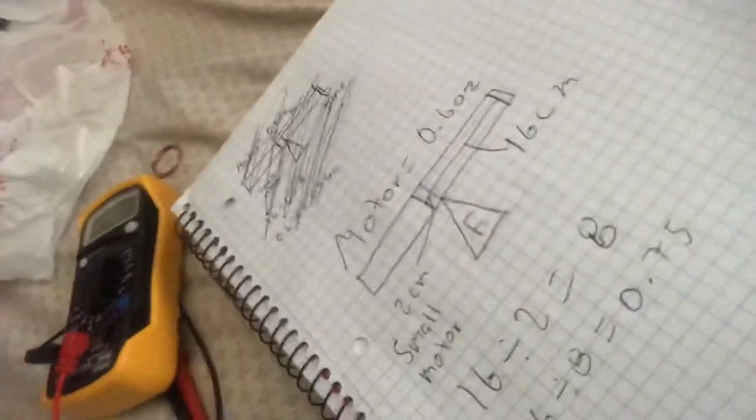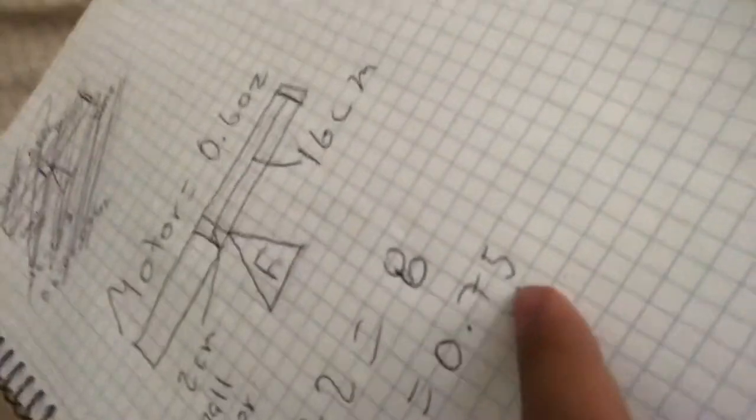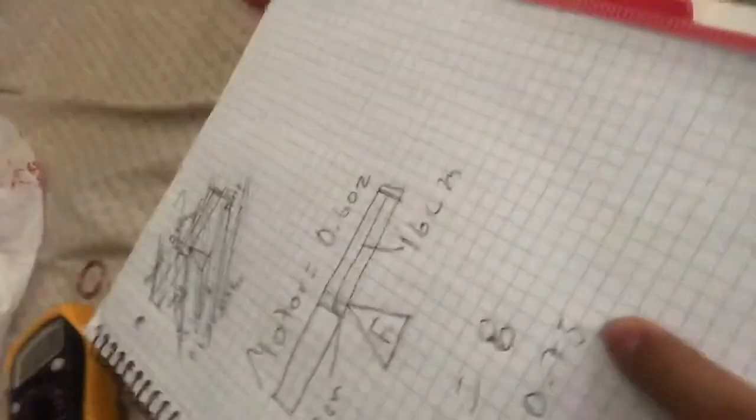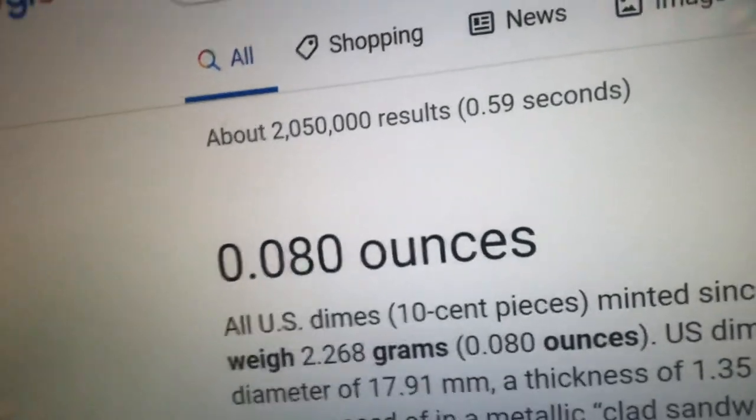The known item that you know the weight of is 0.6 ounces, so 0.6 divided by 8 is equal to 0.075 ounces. That's how much the dime weighs and we got pretty close because look, the dime weighs 0.08 ounces.